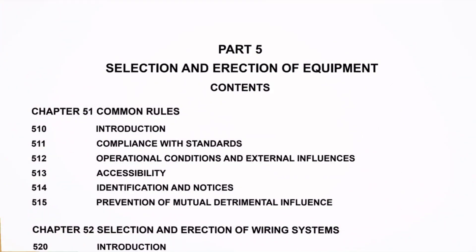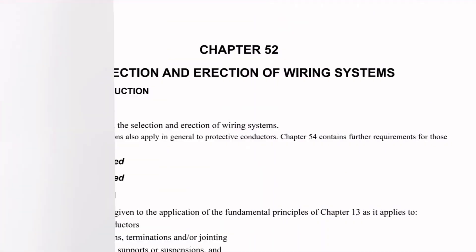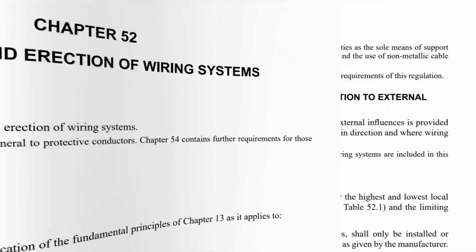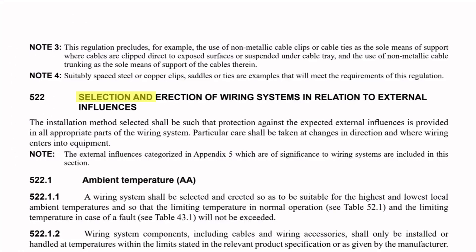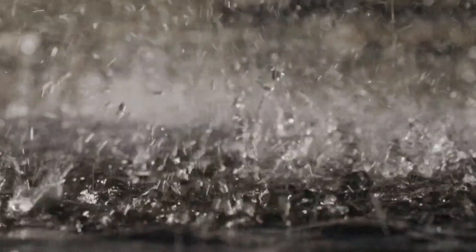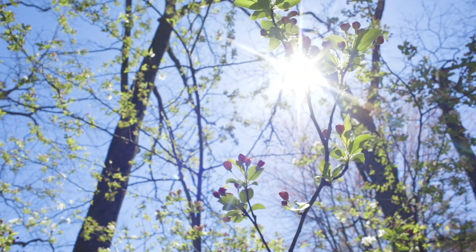Part 5 of BS 7671 covers the selection and erection of equipment. Chapter 52 refers to wiring systems in particular, and in regulation group 522 we find the heading 'selection and erection of wiring systems in relation to external influences.' This group of regulations is broken down into a number of areas covering different things that can negatively affect wiring systems once they're installed.